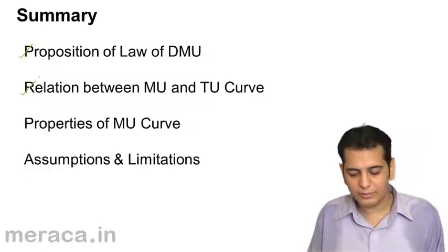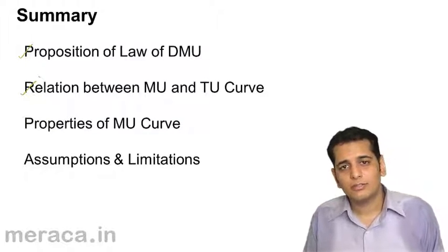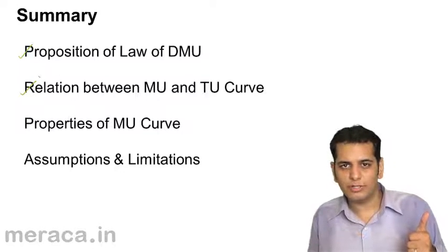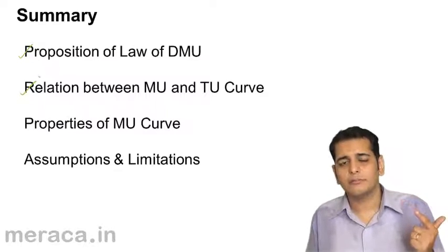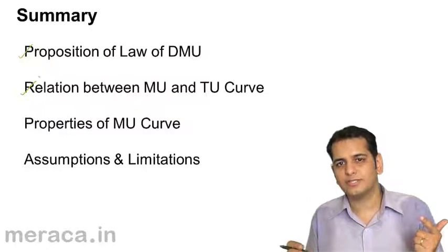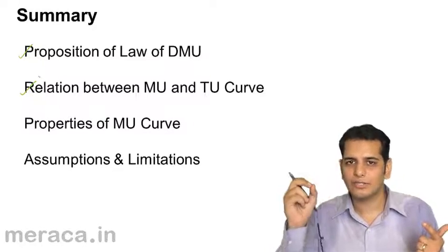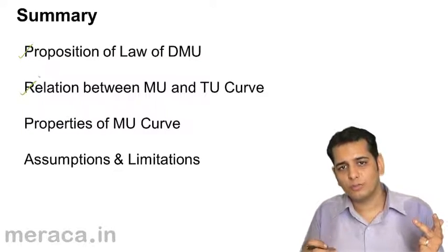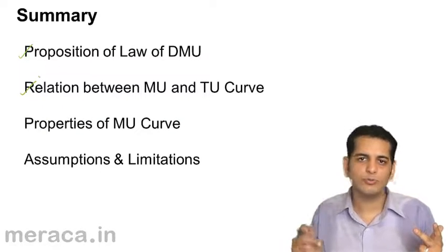We've also done the relation between the MU curve and the TU curve. The relation is: when the MU curve is falling, the TU curve rises. Second, when the MU curve touches the x-axis, the TU curve is at its highest point. Third, when the MU curve goes below the x-axis, the TU curve starts to fall.